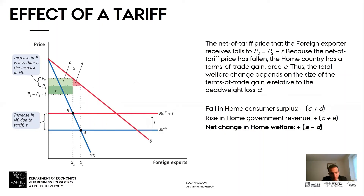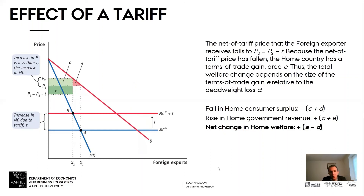Total government revenues are C plus E, and total welfare change is E minus D. In the large economy case with a tariff, the welfare change was E minus D minus B — there was a deadweight loss from consumers and also from inefficient domestic producers producing more. That does not happen here because there are no domestic producers. So imposing a tariff on a foreign monopoly, even as a small economy, can actually generate larger welfare effects than the case of a large economy in perfect competition.